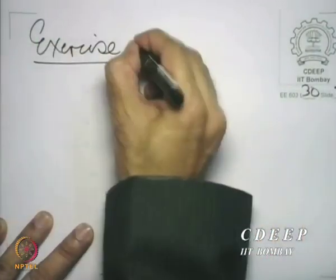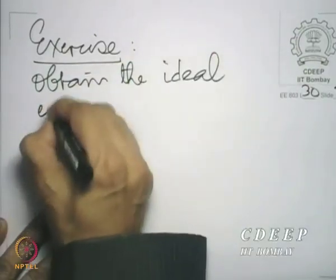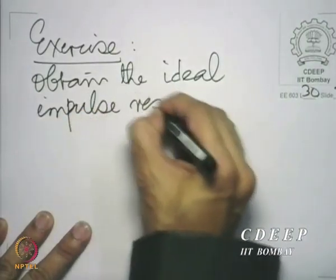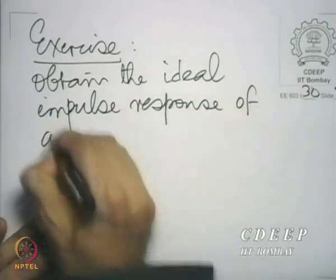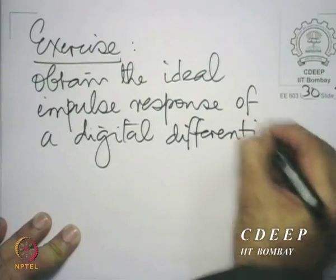The digital differentiator is an example of a system which is not piecewise constant in its magnitude response. We could in principle do the same thing we did in windowing — find the ideal impulse response. Here is an exercise: obtain the ideal impulse response of a digital differentiator, which means find the inverse DTFT essentially. That is very easy to do.